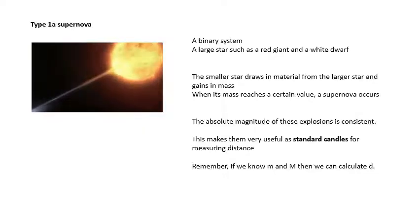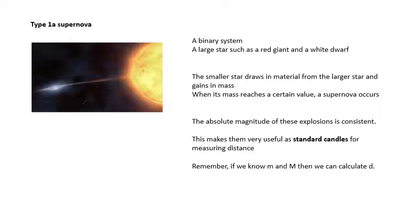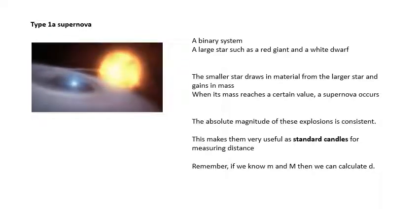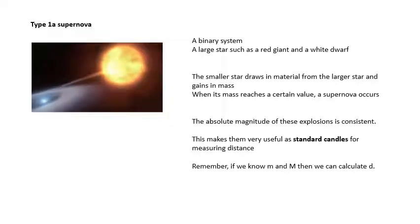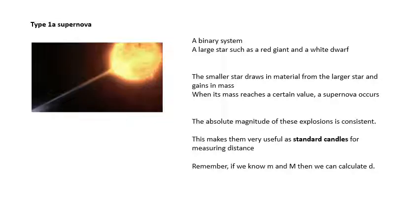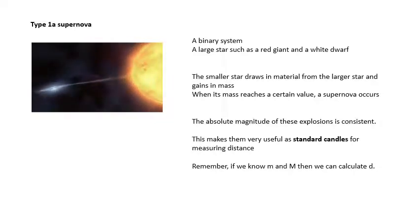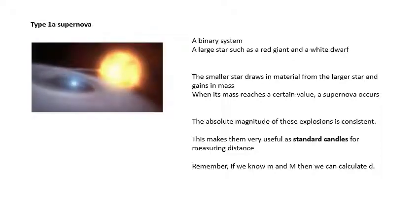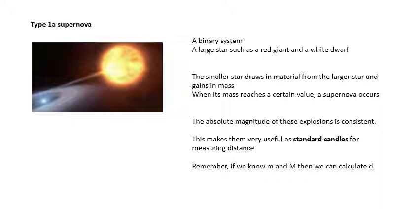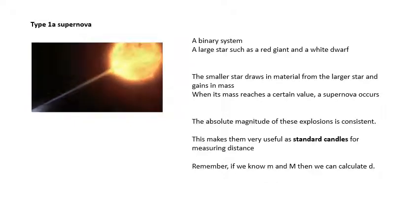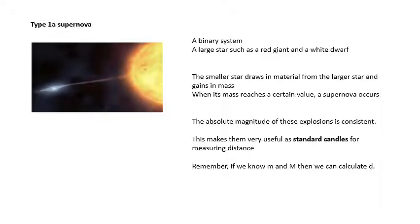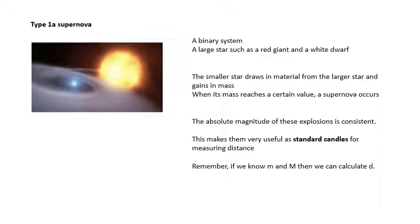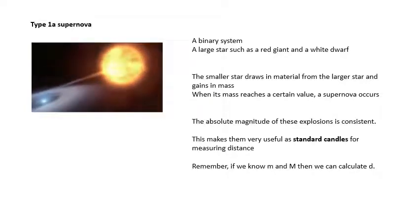When its mass reaches a certain value called the Chandrasekhar limit, you get a supernova. So when the mass reaches a certain value, a definite value, you get a supernova. The flash of the supernova—we know its absolute magnitude because it's the same for all Type 1a supernovae. This means it's very very useful. If you know the absolute magnitude of the explosion and you measure the apparent magnitude, you can work out how far away it is. We call this a standard candle. I'll talk a bit more about standard candles when we do cosmology in a video or two. So it's very very useful for calculating distance. If one of these happens in a galaxy that you're looking at, and if you measure the magnitude of the flash, you can work out how far away the galaxy is. It's called a standard candle.